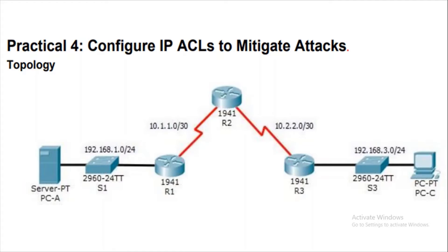Hello everyone. In this video we'll see practical number four: configure IP ACLs to mitigate attacks. ACL is nothing but Access Control List, which we configure on routers to mitigate attacks — meaning to make the count of attacks comparatively lesser.